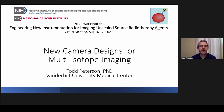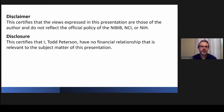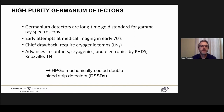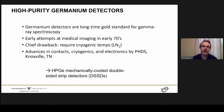I'm happy to be talking with you today about new camera designs for multi-isotope imaging. I have nothing to disclose. The technology I'm going to be talking about today is high-purity germanium detectors. Germanium detectors have been known for a long time as the gold standard for gamma-ray spectroscopy. There were first early attempts at using them for medical imaging back in the late 1960s and early 1970s, but the technology was really not up to the task at that point.